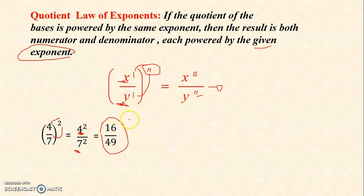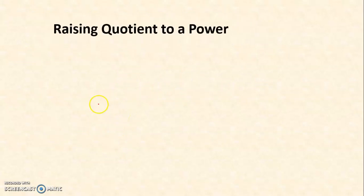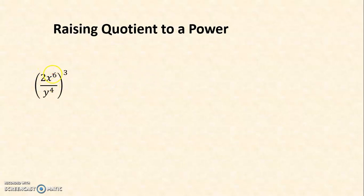That law is otherwise known as raising a quotient to a power. The next example: 2x raised to 6 divided by y raised to 4, and it is being raised to another power. How are we going to simplify it?